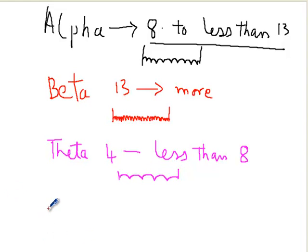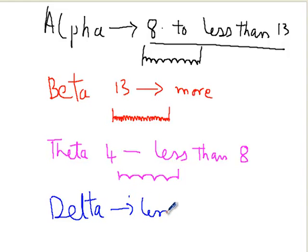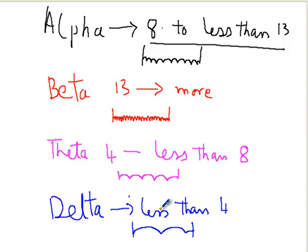Then we talk about delta frequency. Delta frequency is any frequency less than 4 waves per second. So if this is one second and you see these very slow waves, these are delta waves and this is a delta frequency. To summarize: alpha frequency spans from 8 to 13 Hz; beta frequency is 13 Hz or more; theta frequency is 4 to less than 8 Hz; and if you have less than 4 waves per second, you call it delta frequency.